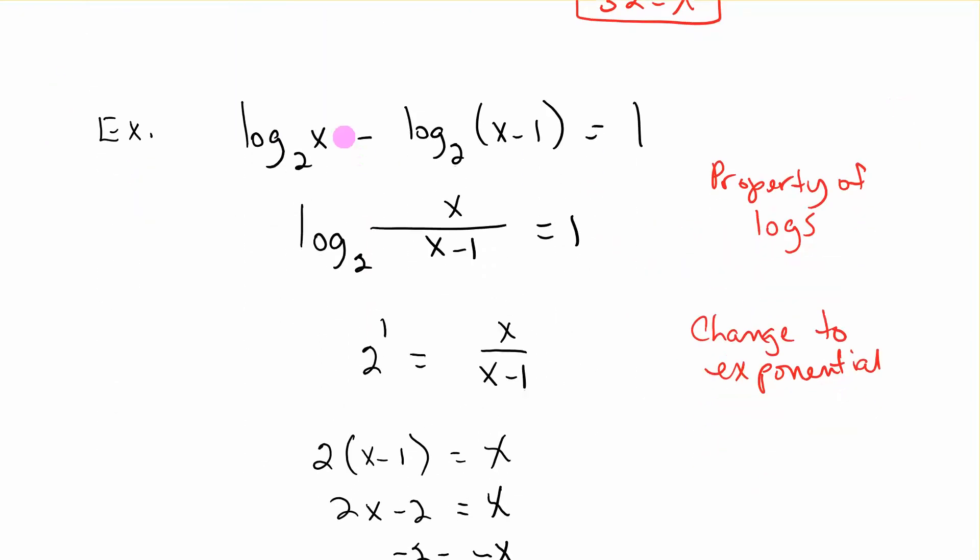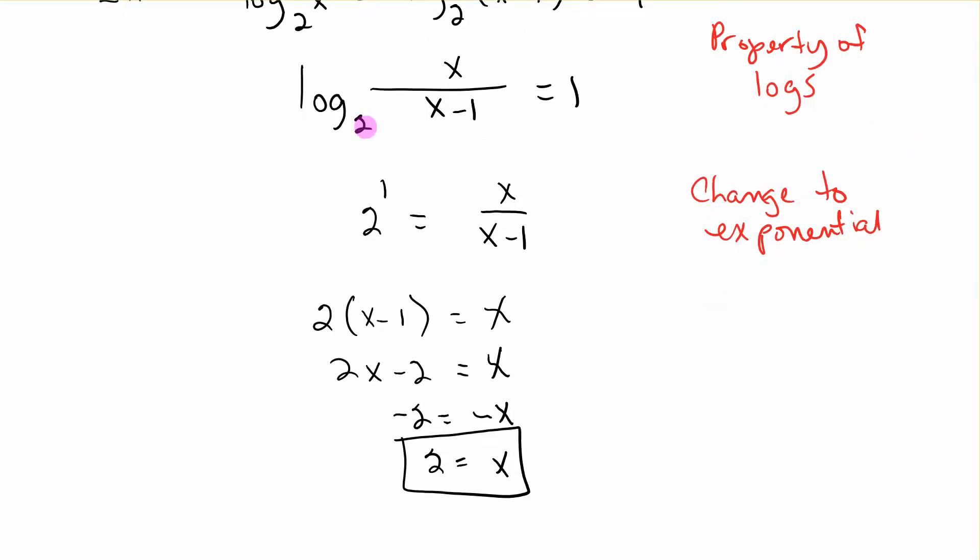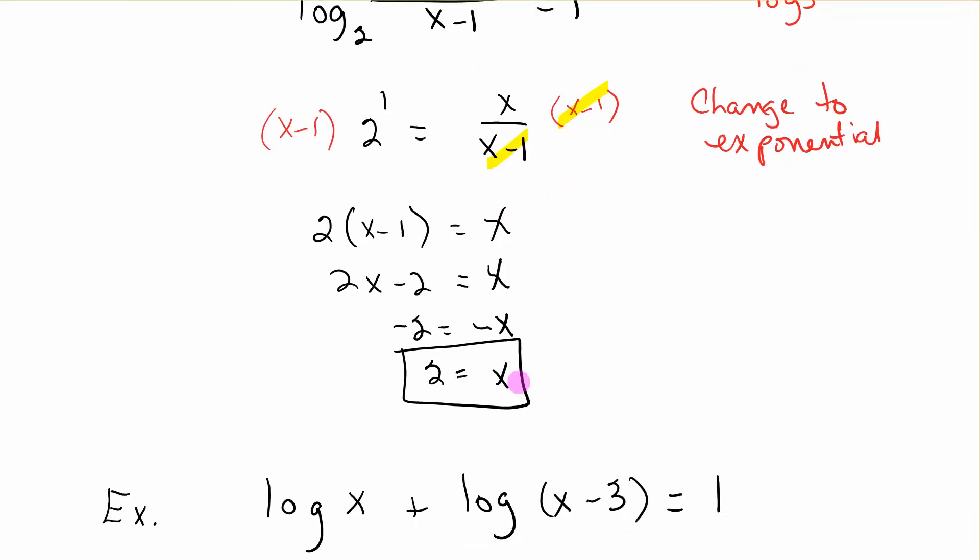In this equation, before we change it to exponential, we need to try to write it as a single log. If we're subtracting, we can write it as a quotient. So this is log base 2 of x over x minus 1. Now change it to exponential. Base to exponent, 2 to the 1st equals x over x minus 1. Multiply both sides by x minus 1, so 2 times that equals x. 2x minus 2 equals x. Subtract 2x, that gives you negative x equals negative 2. Divide by negative 1, you get 2 equals x.